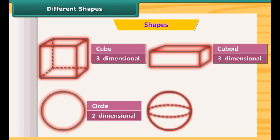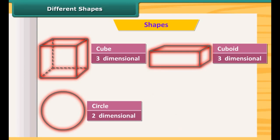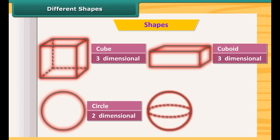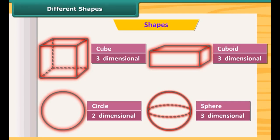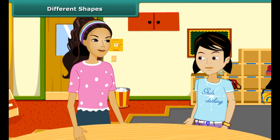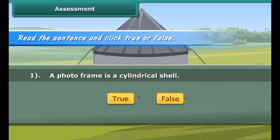Circle — two-dimensional. This is a cuboid — three-dimensional. And this — is it a sphere? Yes, this is a sphere and is three-dimensional. Wow, Rita, you are learning so fast! Tell me more about these shapes.